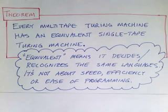This is particularly useful because multi-tape Turing machines are a bit easier to program and more useful for some tasks. Here is the main result. Every multi-tape Turing machine has an equivalent single tape Turing machine. By equivalent I mean that it decides or recognizes the same languages. So it's not about speed, efficiency, or ease of programming. It's just about whether the class of languages that can be recognized is different. And the answer is no.